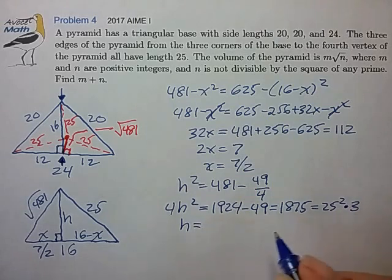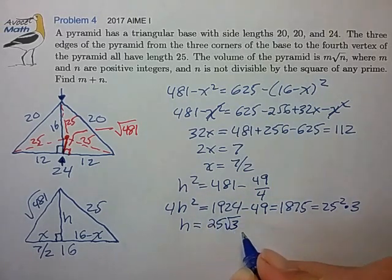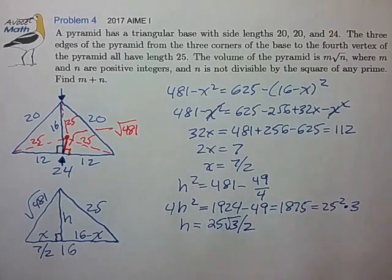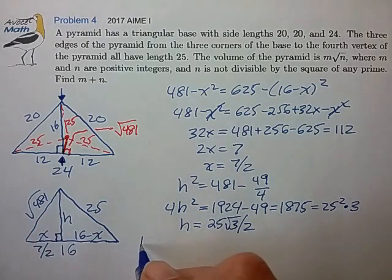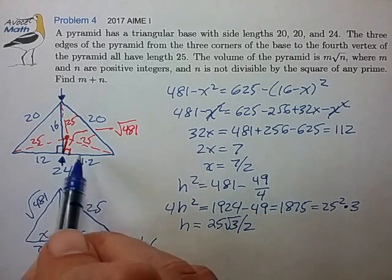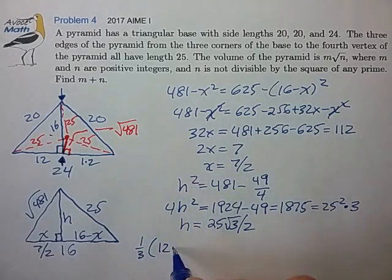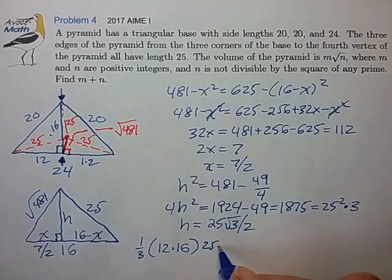And now that we know H, we can calculate the volume of this tetrahedron. It's one third the base area. The base area is 12 times 16, times the height, 25 root 3 over 2.